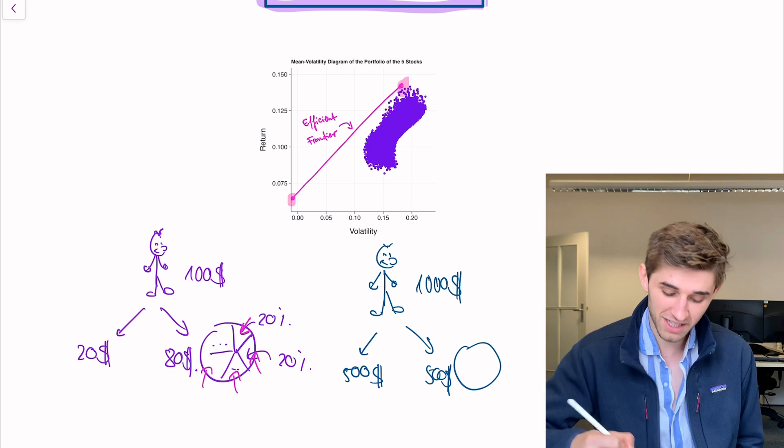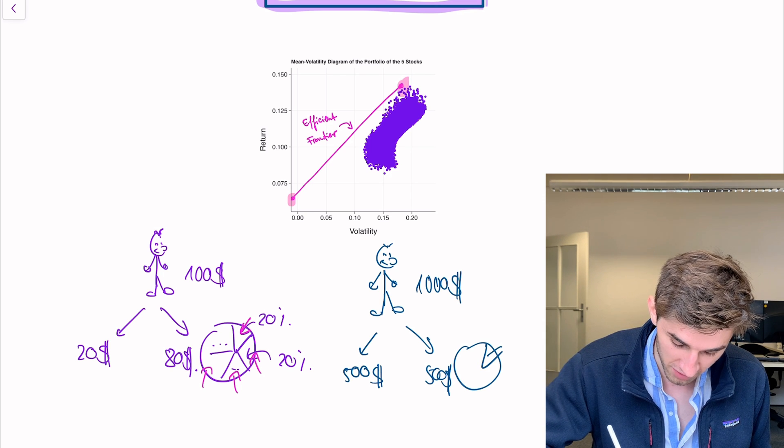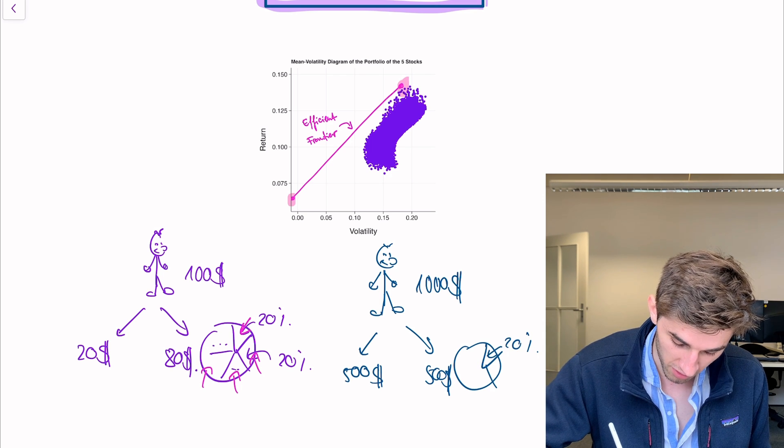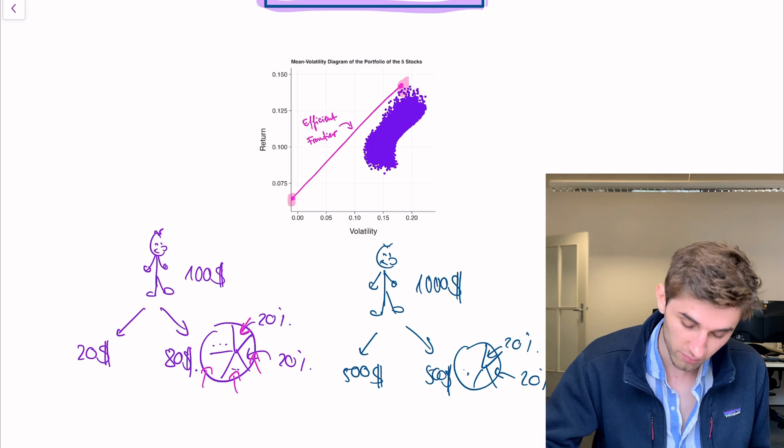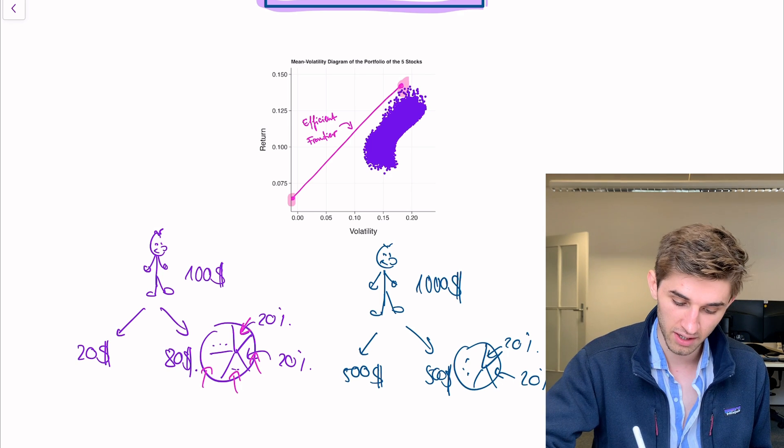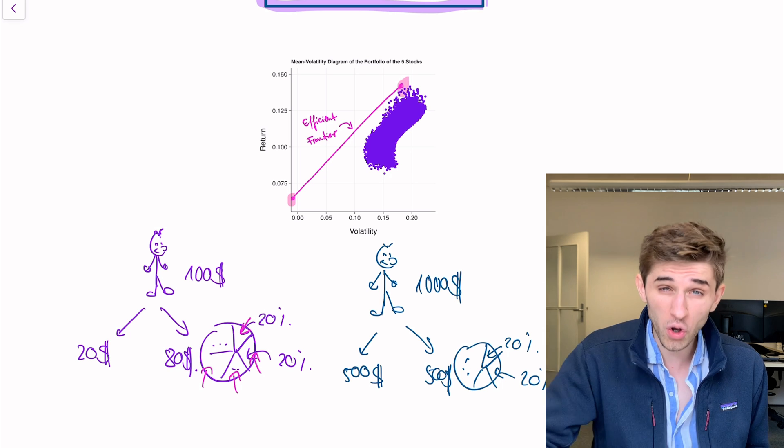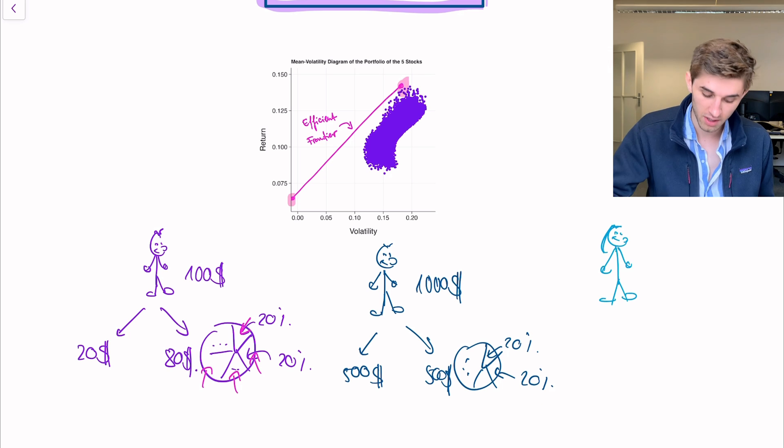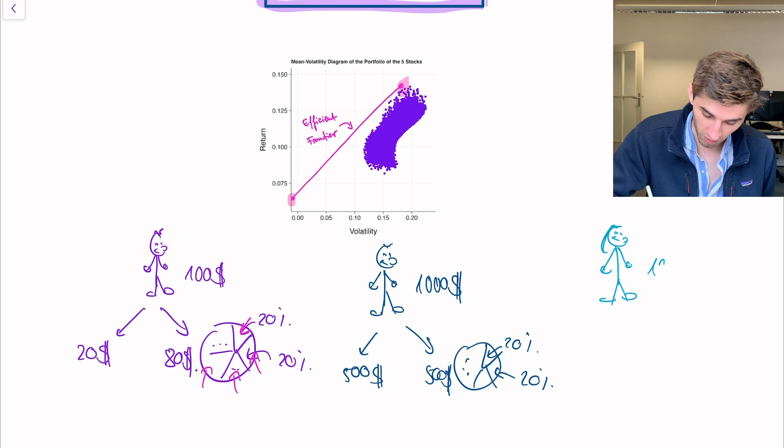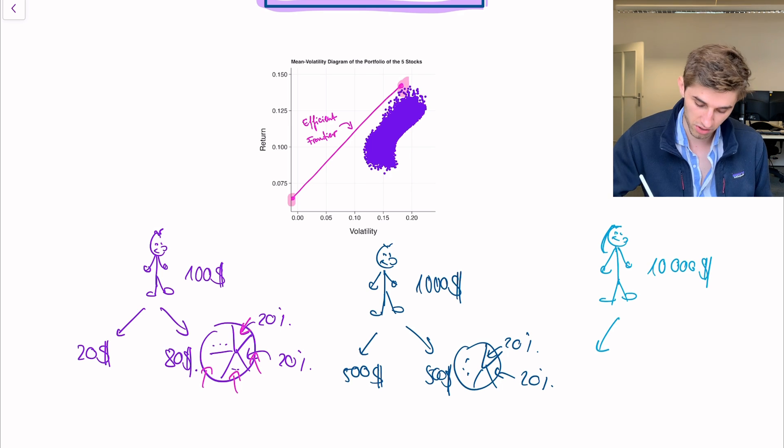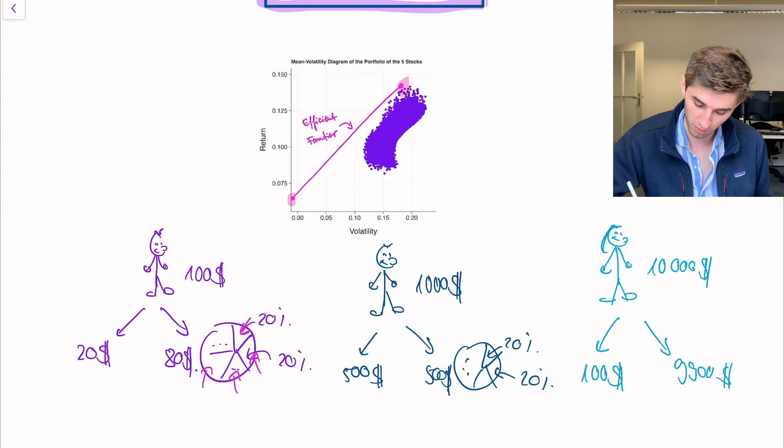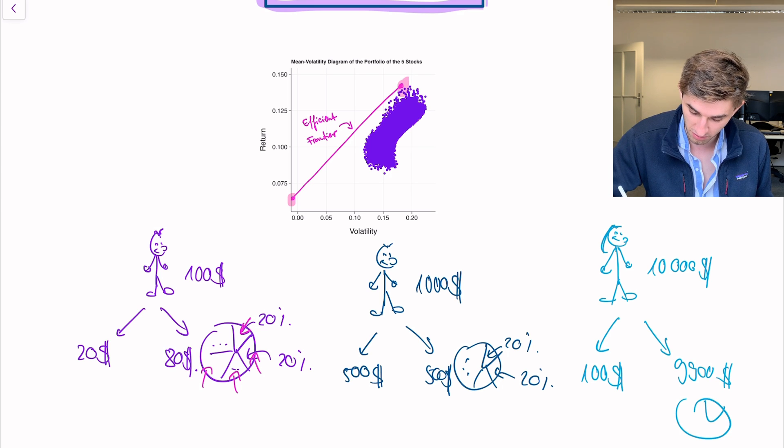And the tangency portfolio, once again, it's the same portfolio. It's 20% of the Tesla stock, 20% of the next stock and so on. And we have a third investor. It's Angela. And Angela is also a mean variance investor. So she puts her $10,000 in part into the riskless bond. Let's say she puts $100 into the riskless asset and the rest, so $9,900 into the tangency portfolio. So once again, same allocation, 20% into the Tesla stock and so on.